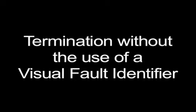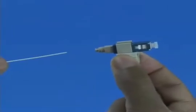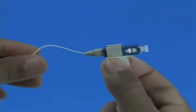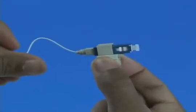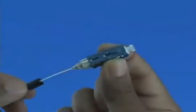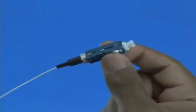Option A: Termination without the use of a visual fault identifier. Insert the fiber slowly into the rear of the connector until a connection is made. Make a bend in the fiber to maintain connection. Squeeze both sides of the wedge clip to release the wedge. Discard the wedge clip. Slide the 900 micron boot onto the connector. Termination is now complete.